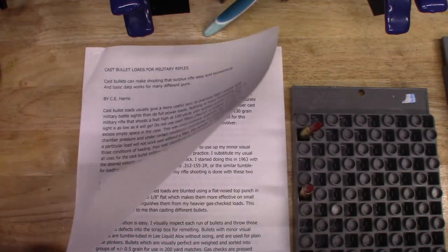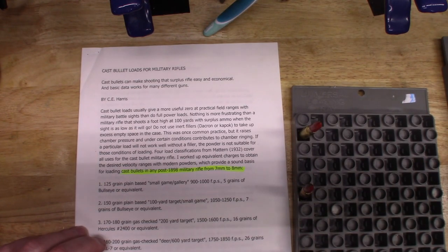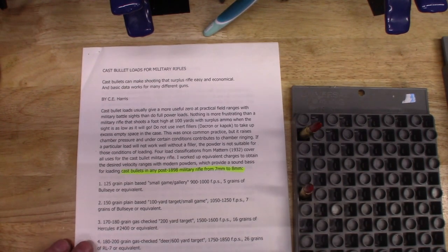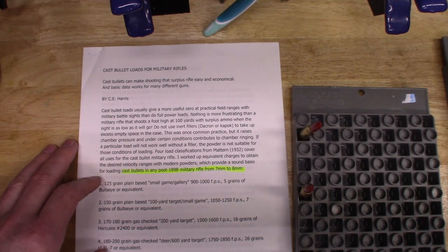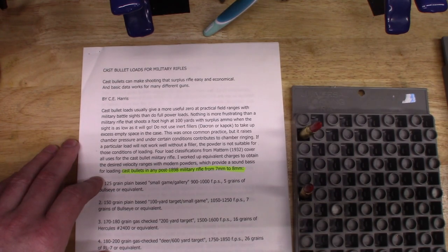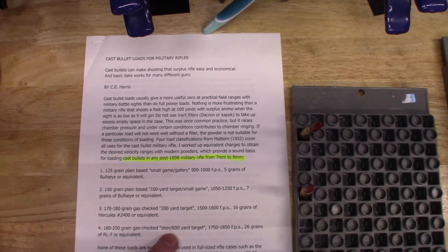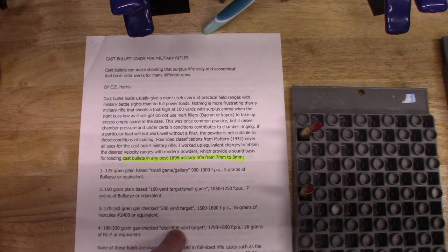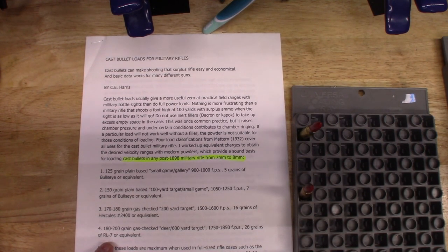This gives you guidelines for a bunch of different calibers and what powders to use for what grain of cast bullet. It starts out with a guideline here of just basic 100 yard, 200 yard, and then actual gas checked deer hunting loads that have a higher velocity to where you could actually hunt with them.